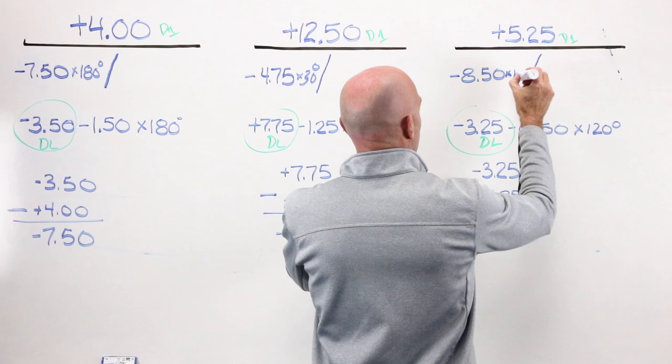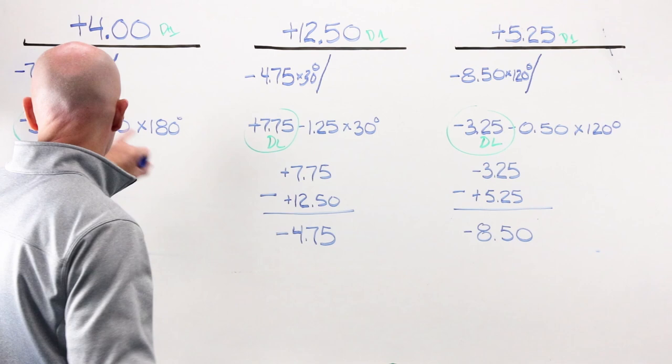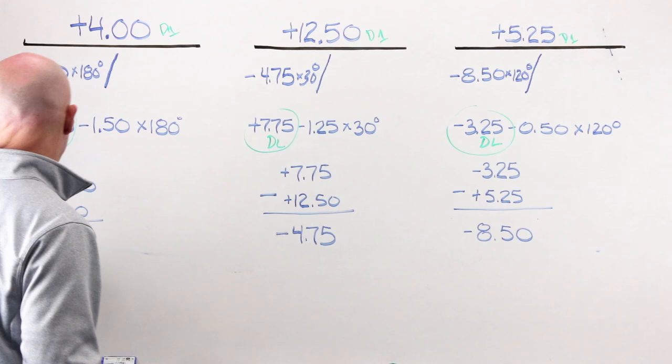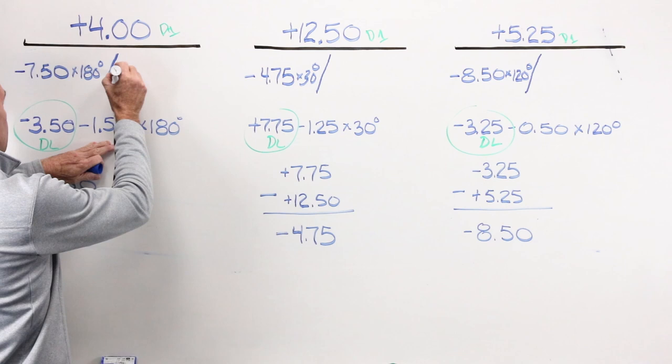This is a spherocylinder lens. It has two curves, it has two different powers on the back. So we need to account for what's 90 degrees away also. My cylinder value is minus 1.50. My second curve is going to be 1.50 diopters stronger than the other. So on the back here, I'm going to have a minus 9 at 90 degrees.